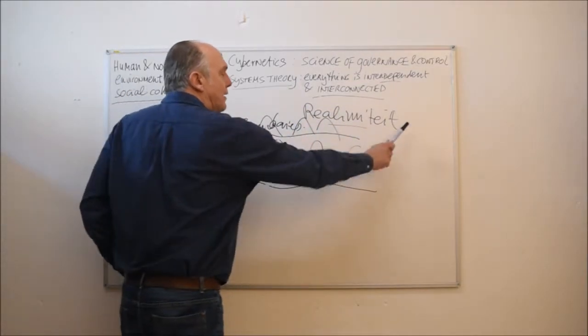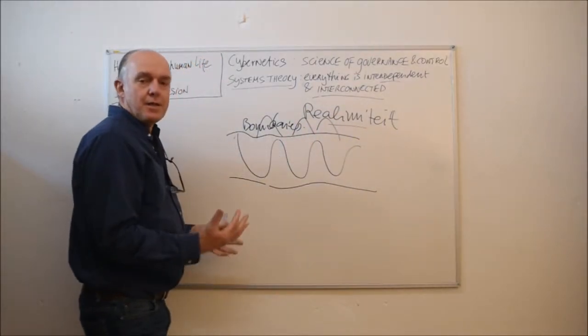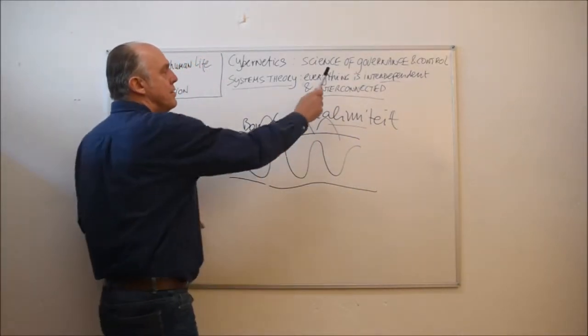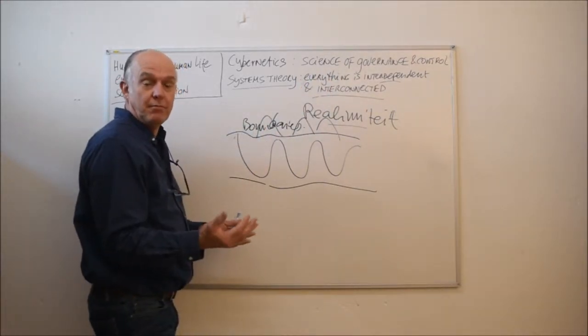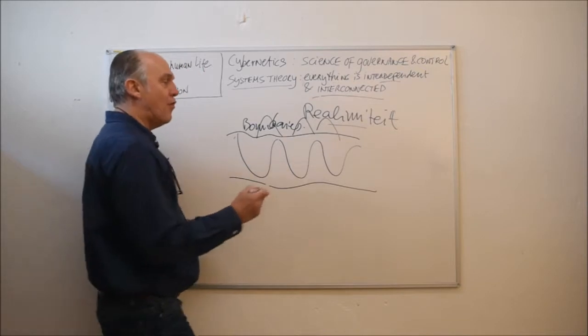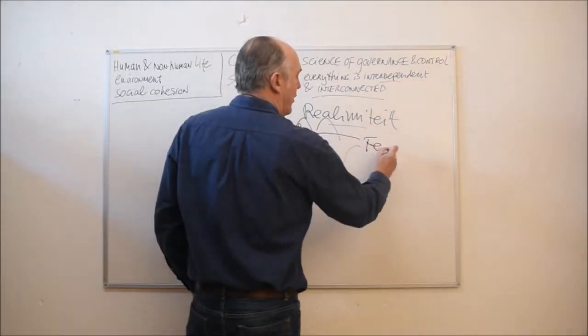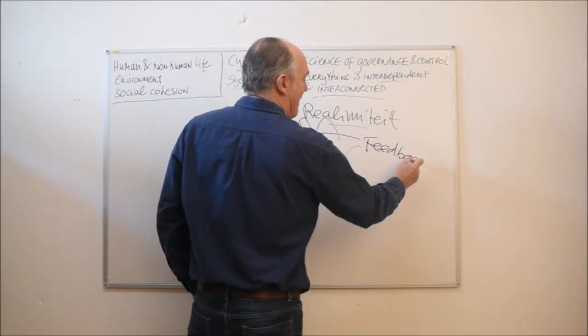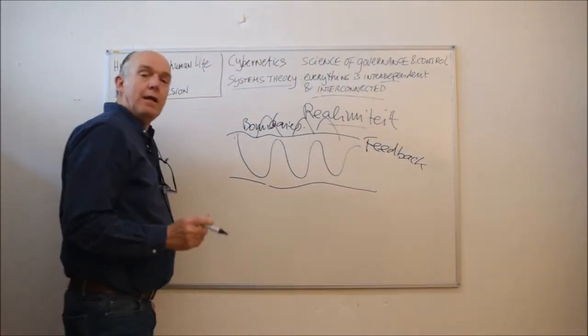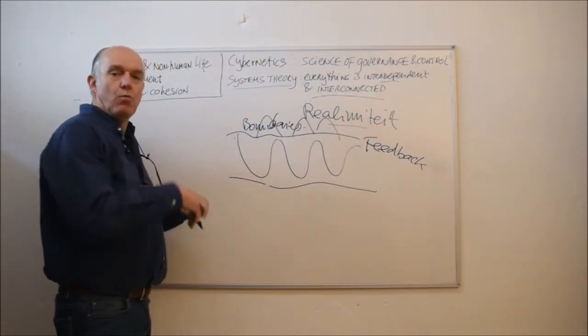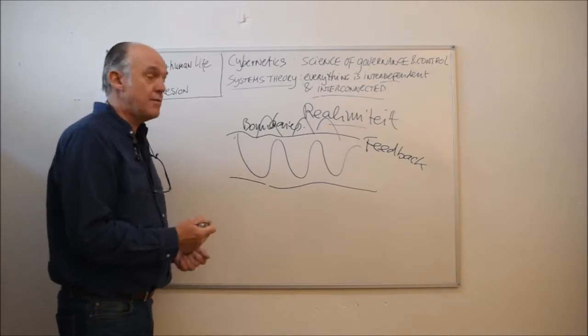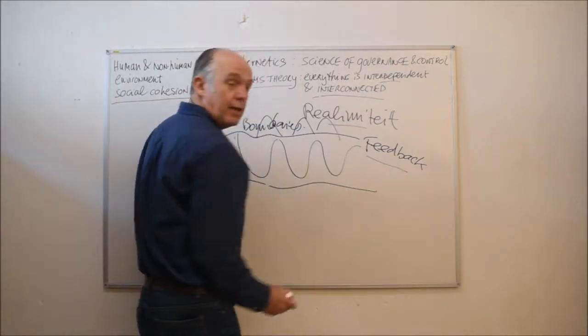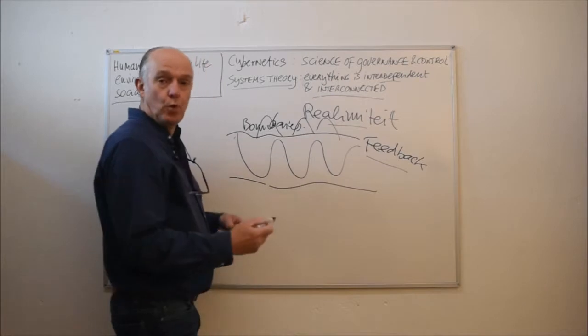Realimiteit is a concept based upon the science of governance and control information in the form of feedback. Systems that want to survive, systems that want to maintain and sustain themselves, need feedback in order to learn.